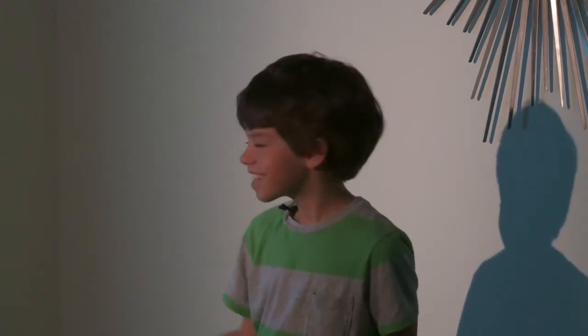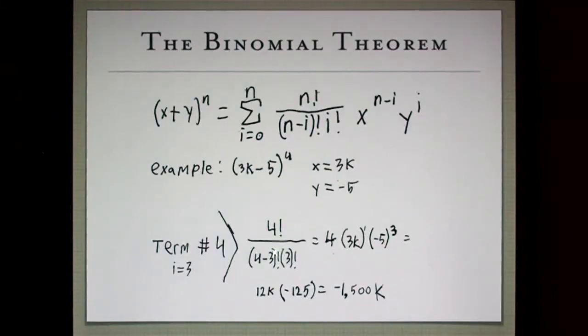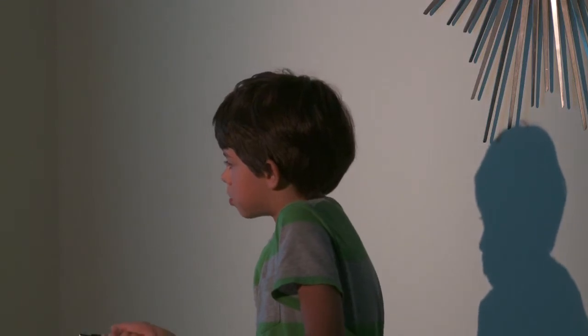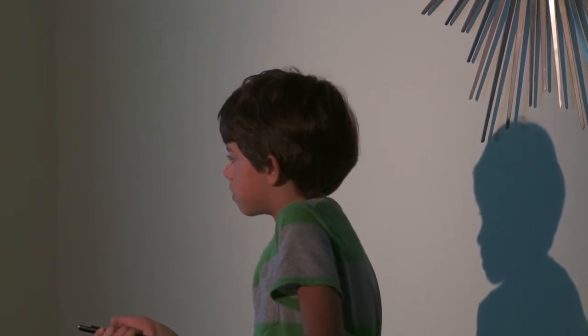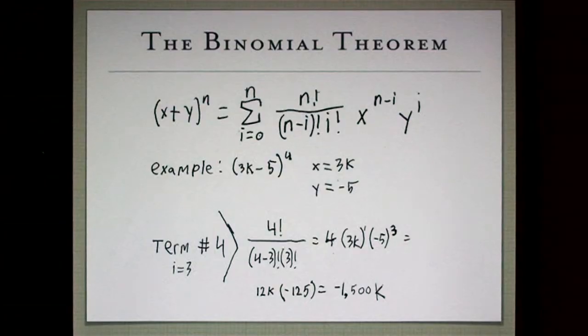So then, our term number 4, it's the same thing again. 4 factorial, 4 minus 3 factorial times 3 factorial is 4 times 3k times negative 5 cubed. When you multiply those out, 4 times 3 is 12, 12k times negative 125, it's negative 1,500k.